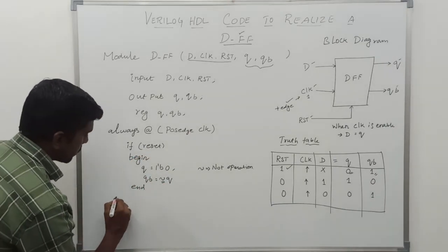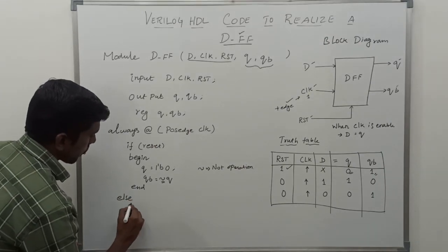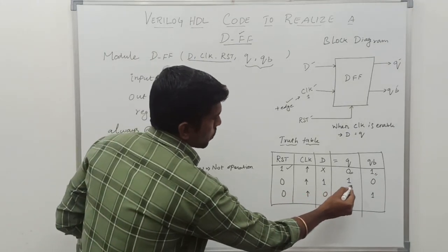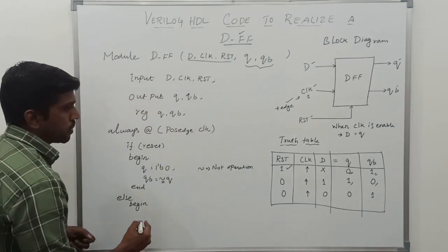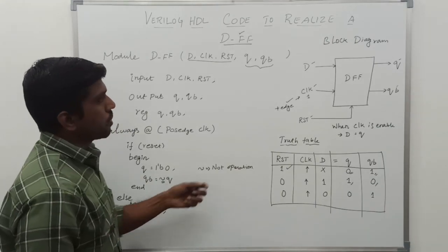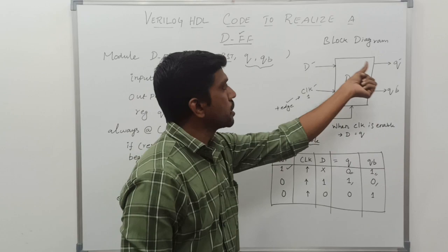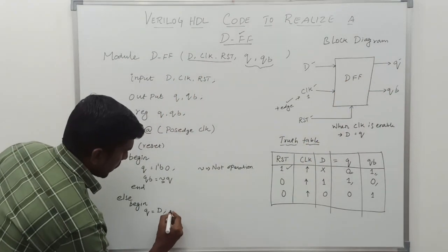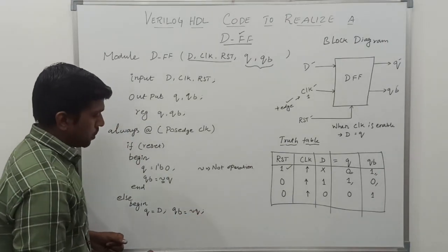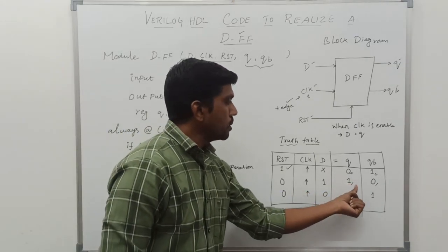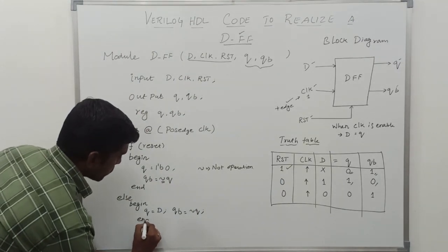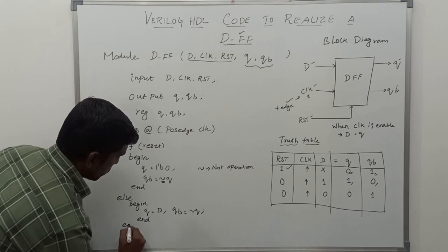Then we go to the second case — the else branch. Begin the process. Here Q equals D, so whatever value D holds, Q takes that same value. QB is the complement of Q — so complement of 1 gives 0. Then end, end process. Finally, end module.